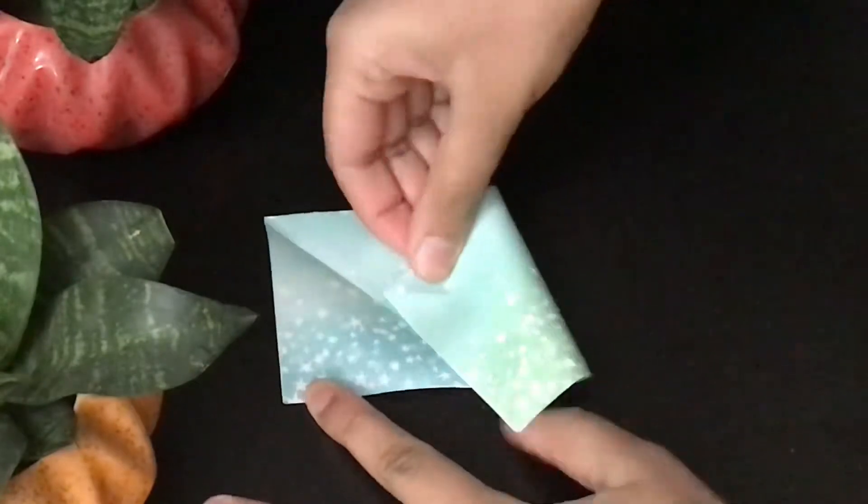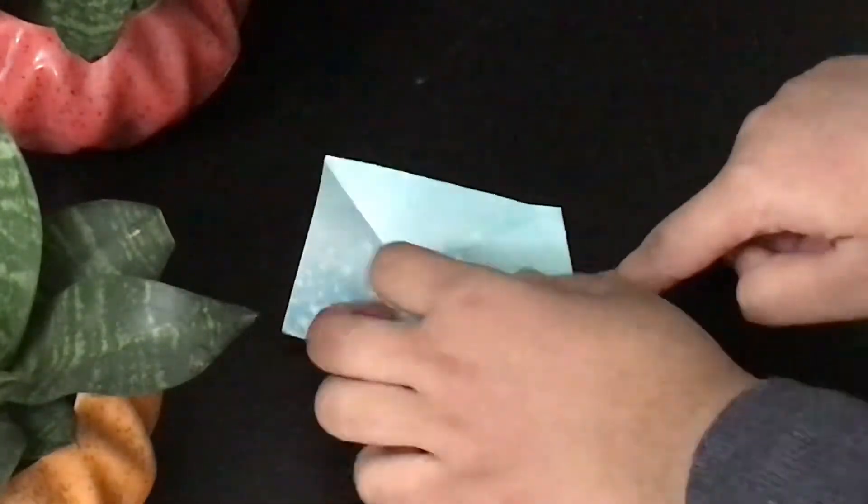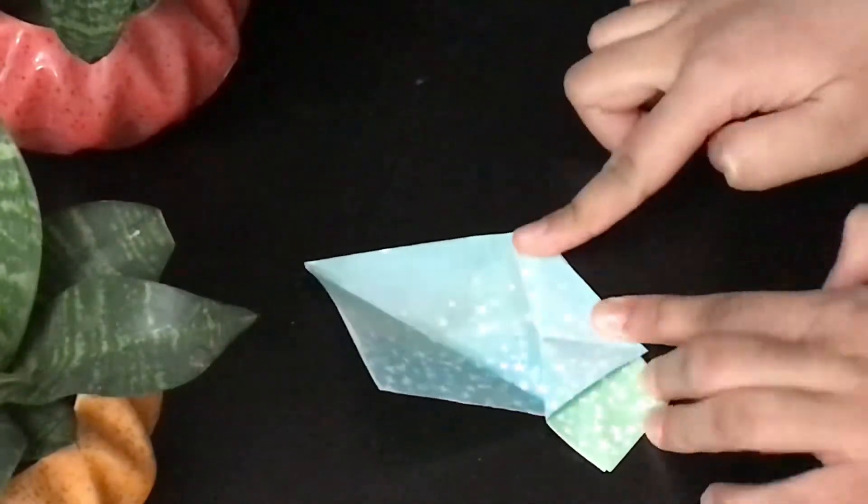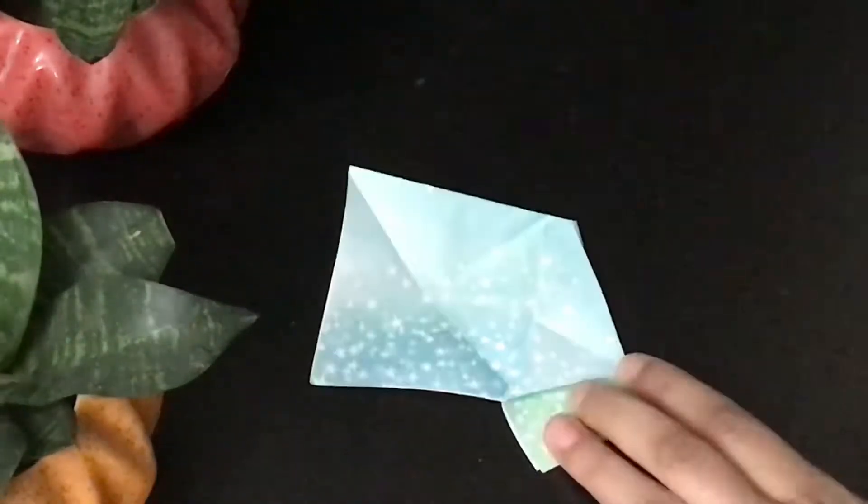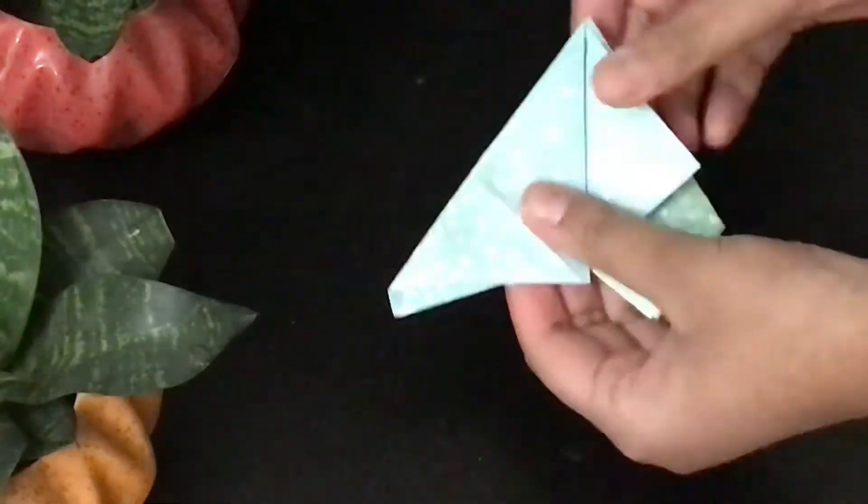Now, bring the top right corner towards the middle point of the second cross. Then, fold the flap as shown. Now, bring this flap as shown. This is how it will look.